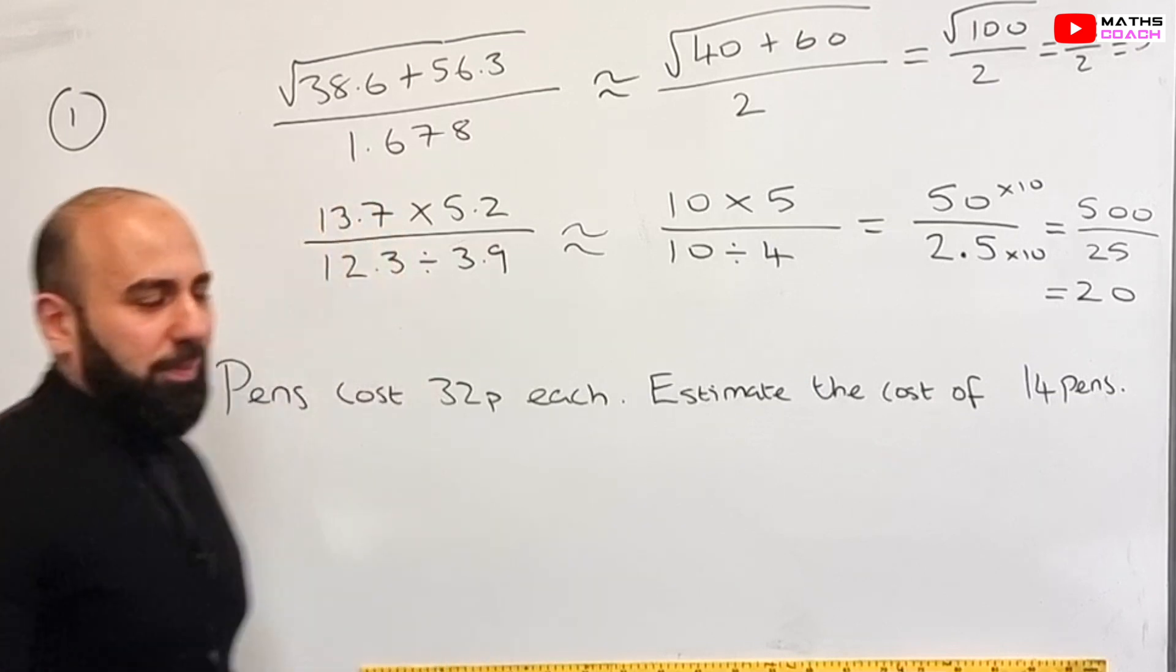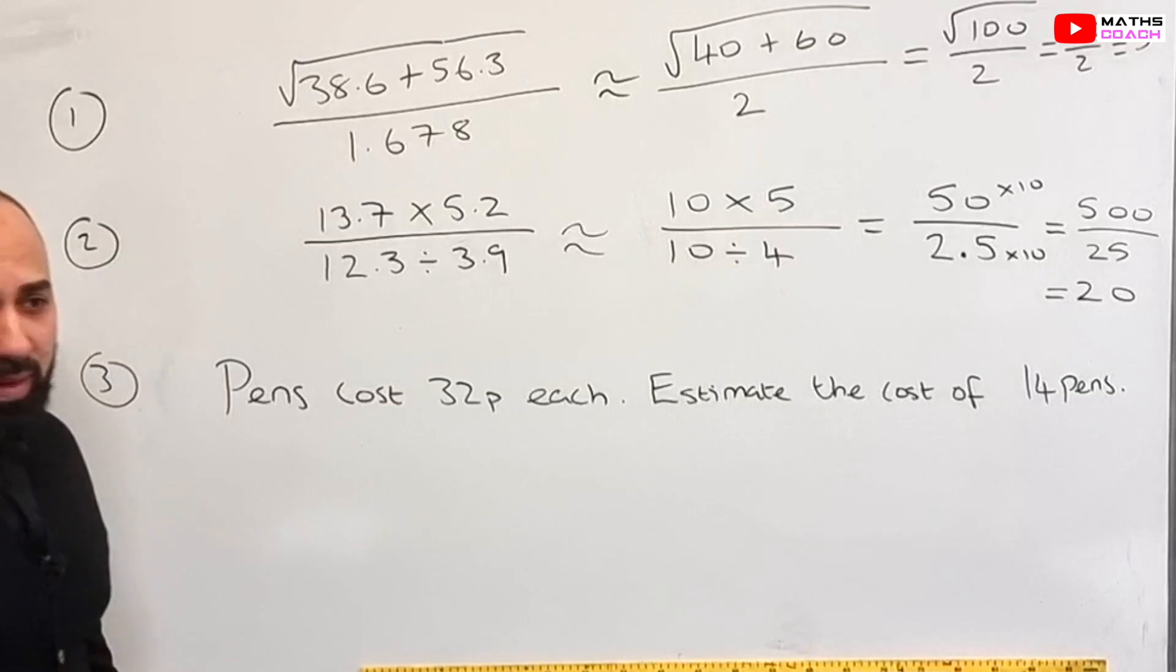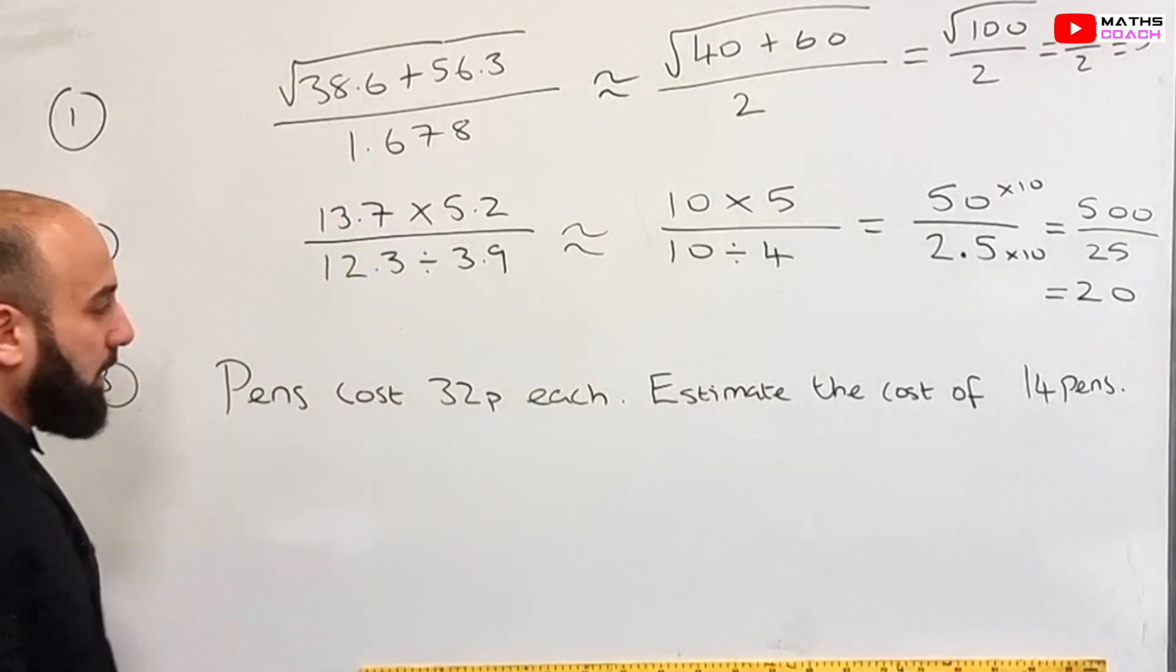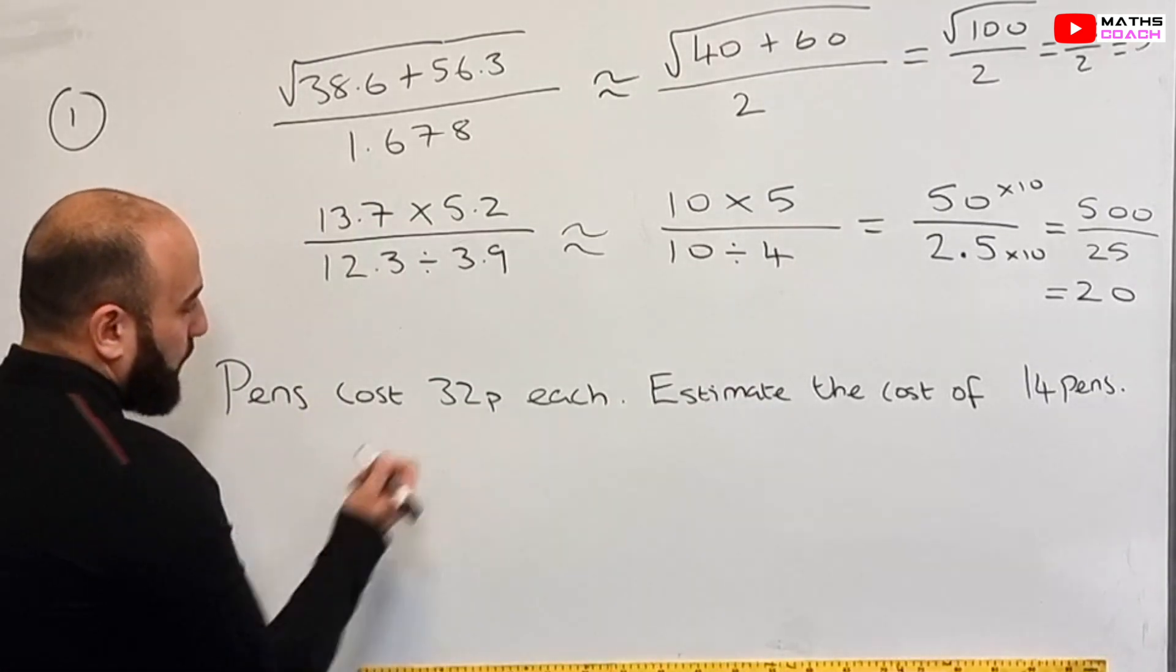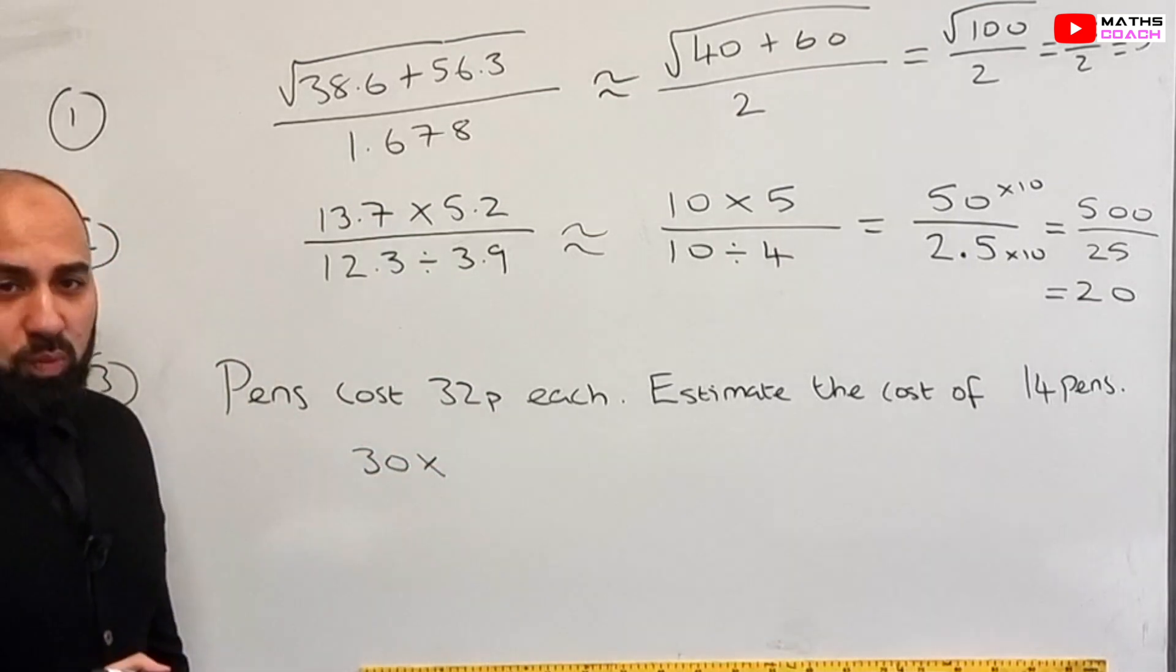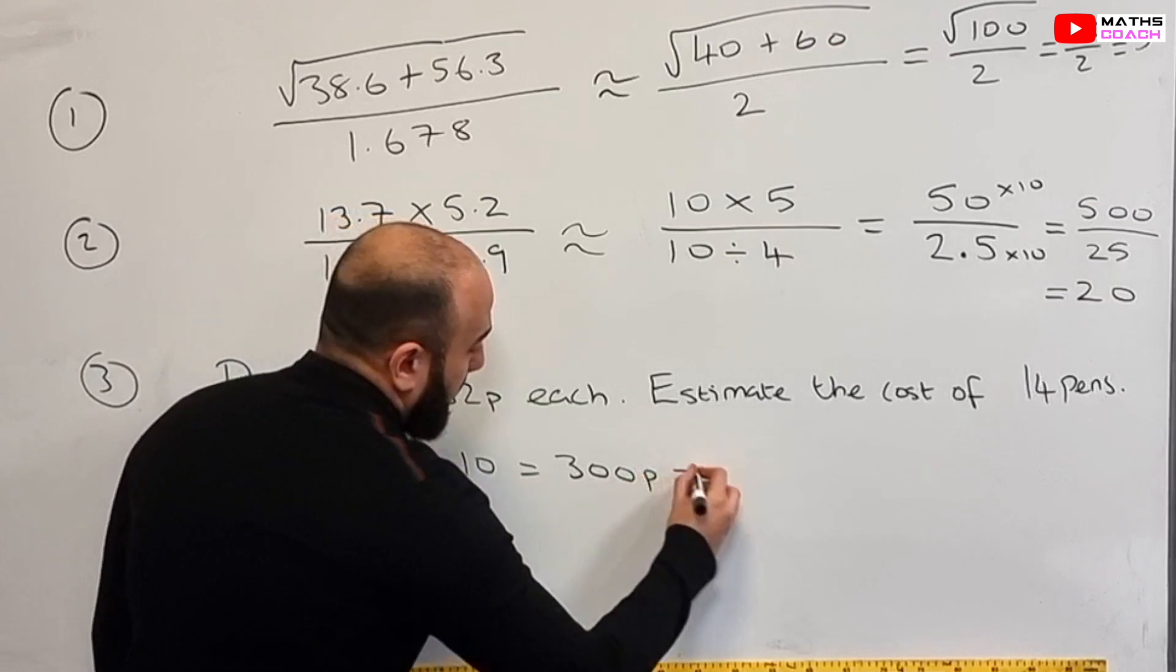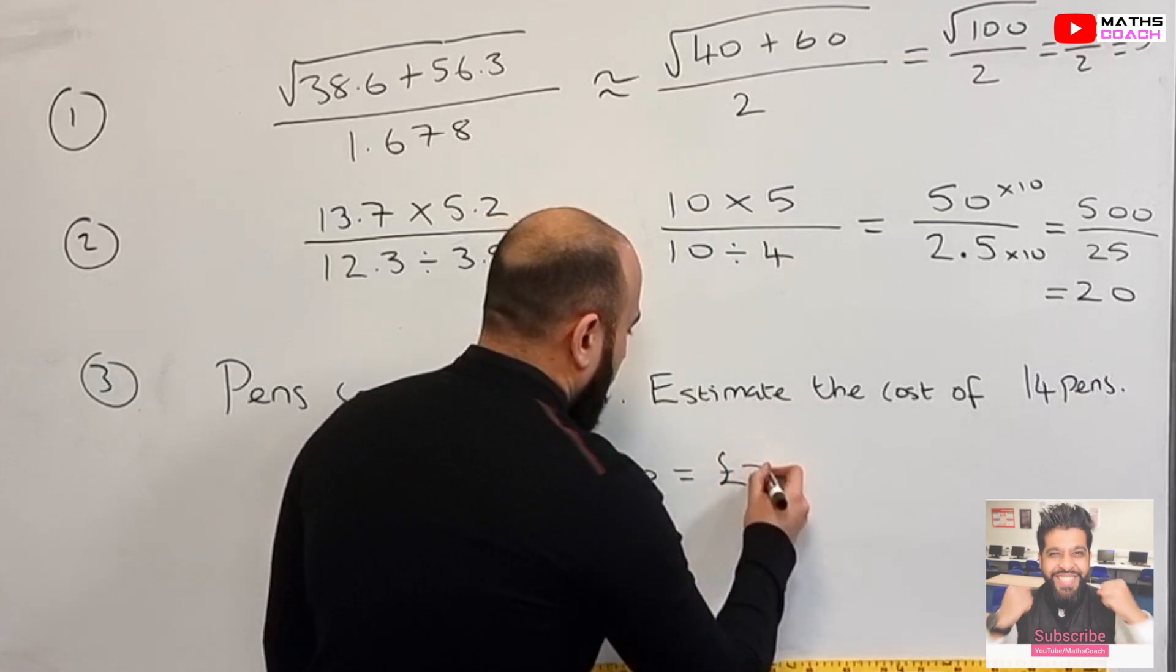Let's now look at question number three. Pens cost 32 pence each. Estimate the cost of 14 pens. So normally if you are not estimating, you would do 32 pence times 14. But as we're estimating, we're going to round the 32 pence and the 14 pens to 1 SF. So 32 to 1 SF is 30 times by 14 to 1 SF, which is 10. And that gives us 300. So that's 300 pence. We could change that to pounds and divide by 100 and that gives us 3 pounds.